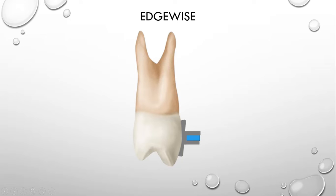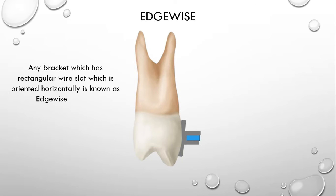In other words, you can say that the edge of the wire is towards the tooth or wire is standing within the bracket on its edges. And from that the terminology edgewise was derived. Now you should remember that whenever the word edgewise is used, it means any bracket system which has rectangular wire slot and which is horizontally oriented is known as edgewise bracket.